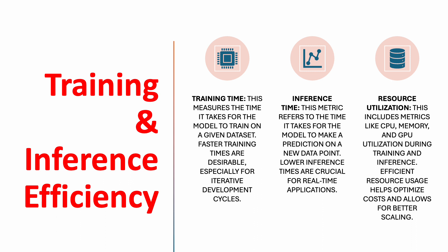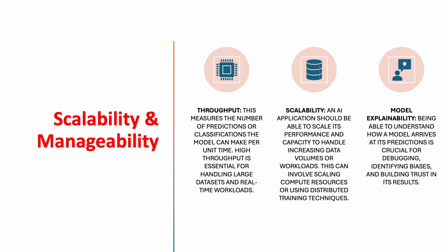The second category is training and inference efficiency. Training time measures the time taken for the model to train on a given dataset — faster training times are desirable, especially for iterative development cycles. Inference time refers to the time taken for the model to make a prediction on a new data point. Lower inference times are crucial for real-time applications, especially for end-user interfaces. Resource utilization includes metrics like CPU, memory, and GPU utilization during training and inference. Efficient resource usage helps optimize cost and allows for better scaling.